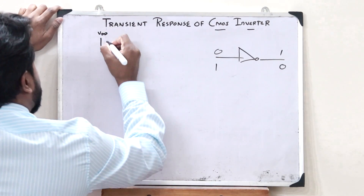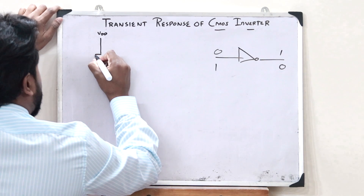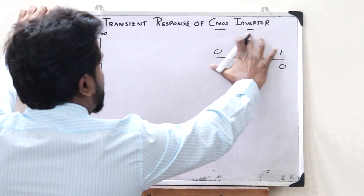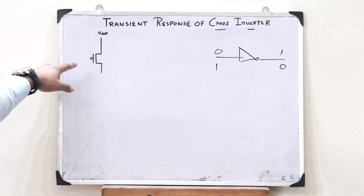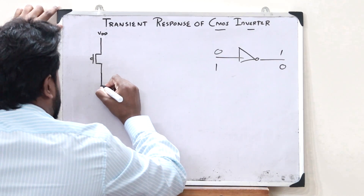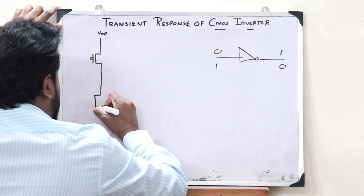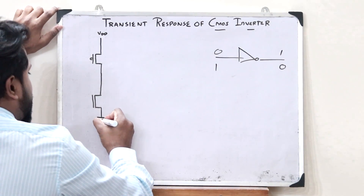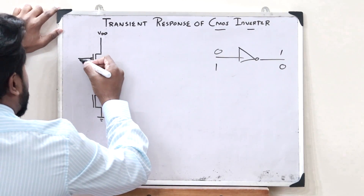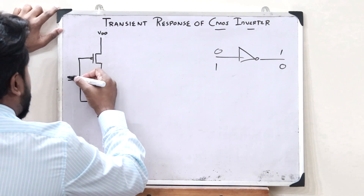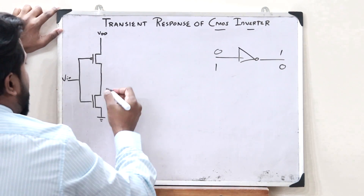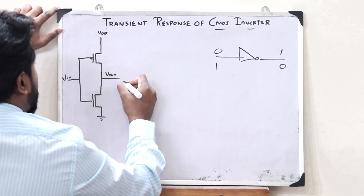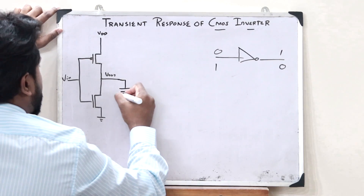This is connected to VDD, and the pull-up network is made up of PMOS transistors. In the case of a CMOS inverter, it will have one PMOS transistor. This PMOS transistor is now connected to an NMOS transistor which forms the pull-down network, and this is connected to ground. At the gate terminal, we give the input V_in, and over here we get the output V_out. This can be connected to a load capacitance CL.